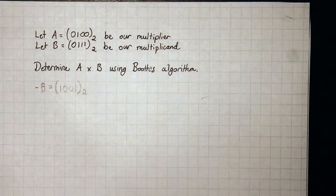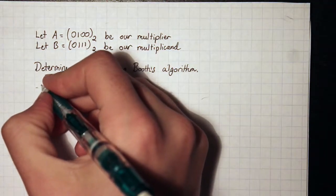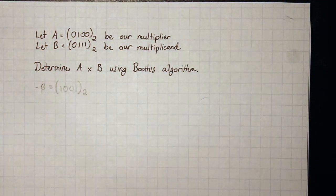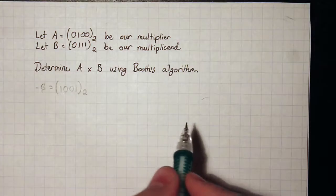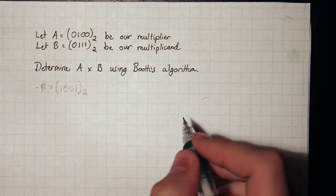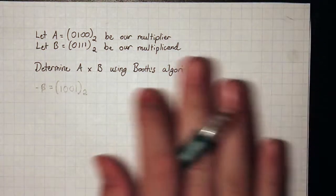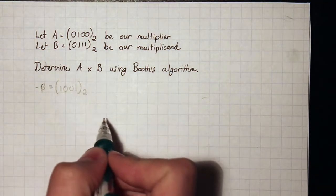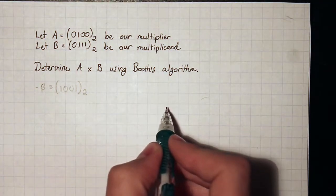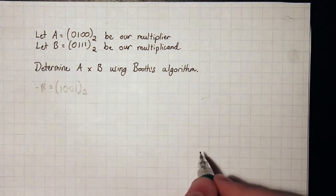Now that we have that out of the way, the next thing we need to do is set up a table. Booth's algorithm has a very specific table with certain columns: an iteration column, which is the current level that you've shifted the product register; a step column; a product column; and a last column, which is the last bit shifted out of the register. Then there's a description column. Our product register is going to be 8 bits wide, and last is going to be 1 bit.